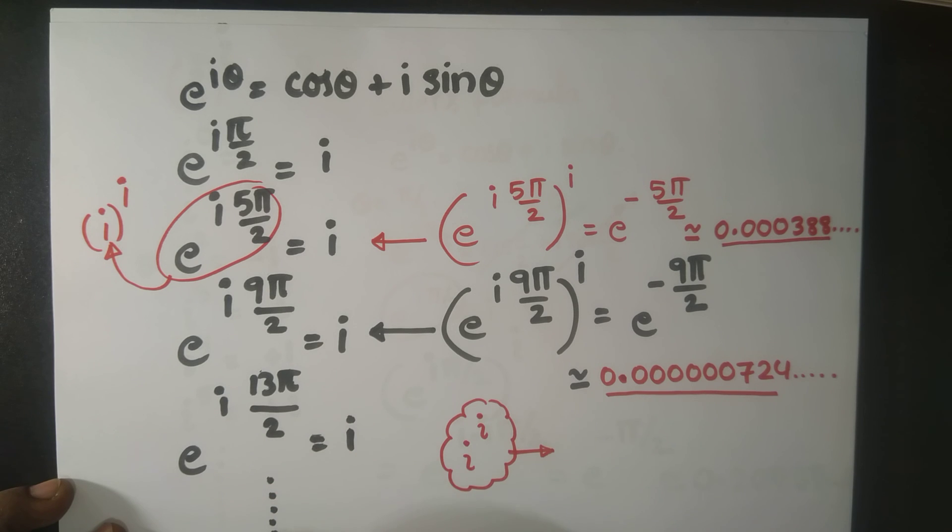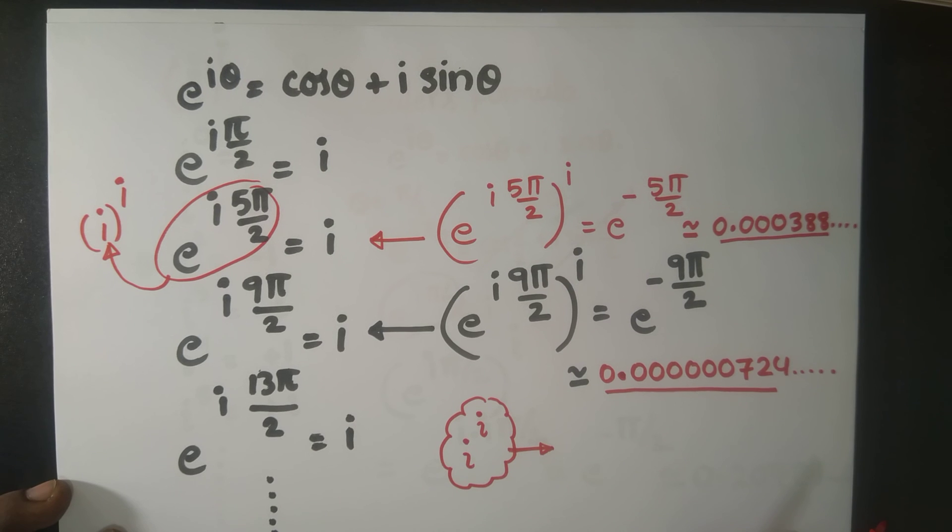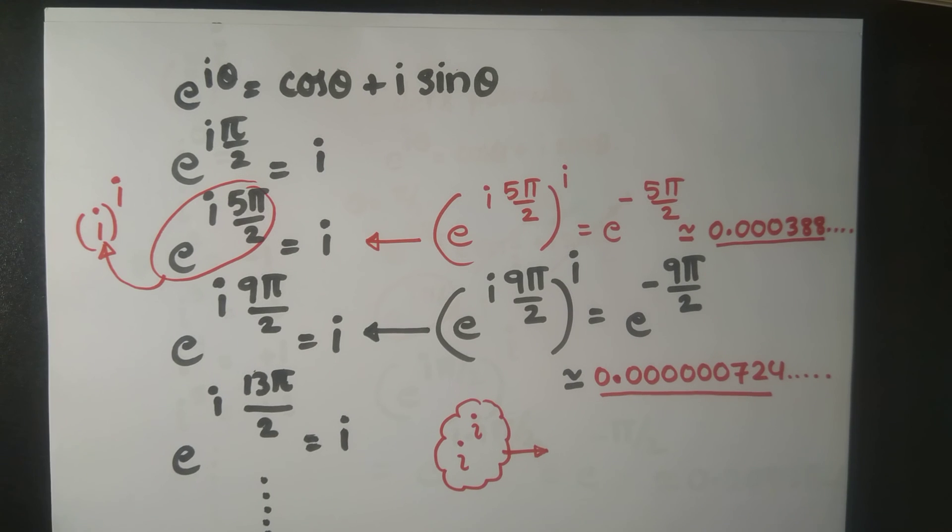You can keep going with e^(i·17π/2) or e^(i·21π/2), e^(i·25π/2). For all these cases we get i, and again this quantity you plug in here and you try to find i^i. So one of the great mysterious concepts we have unfolded. Okay, bye for now. Thank you.